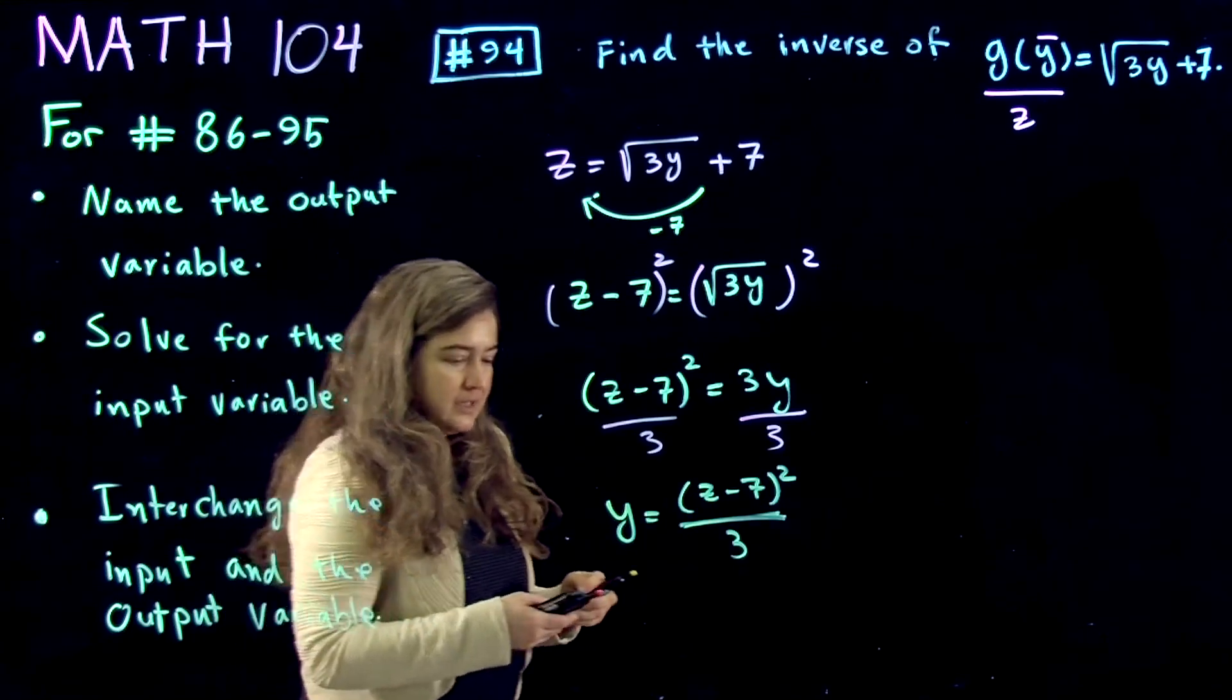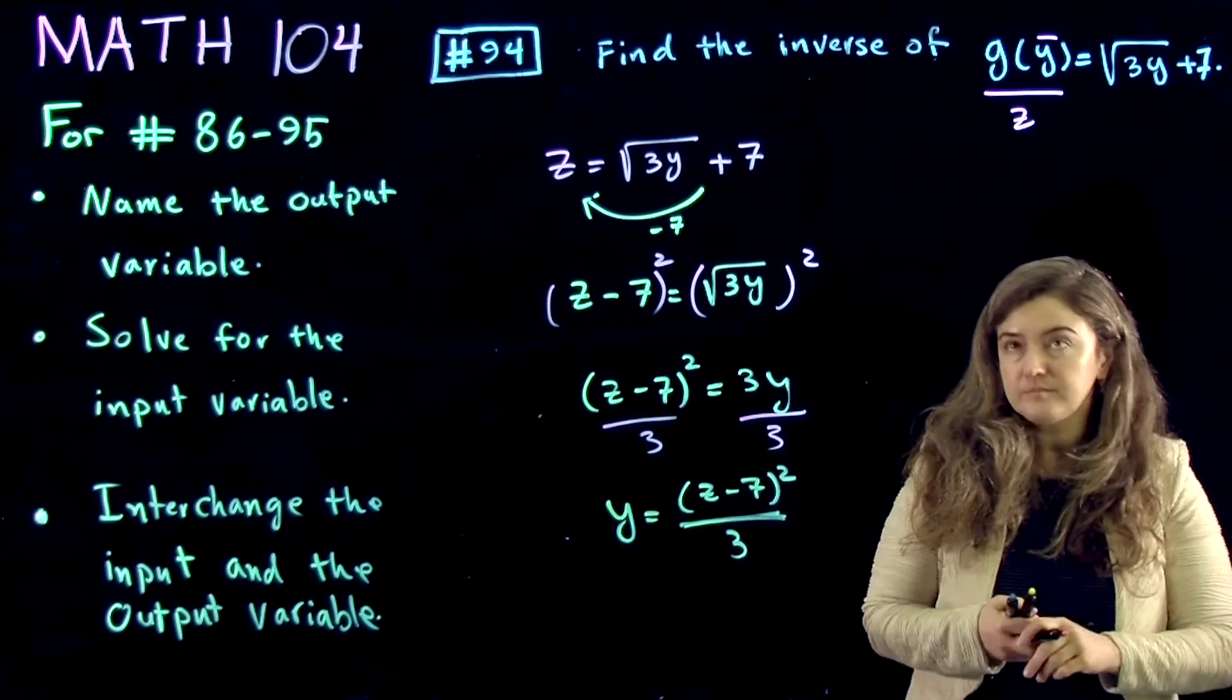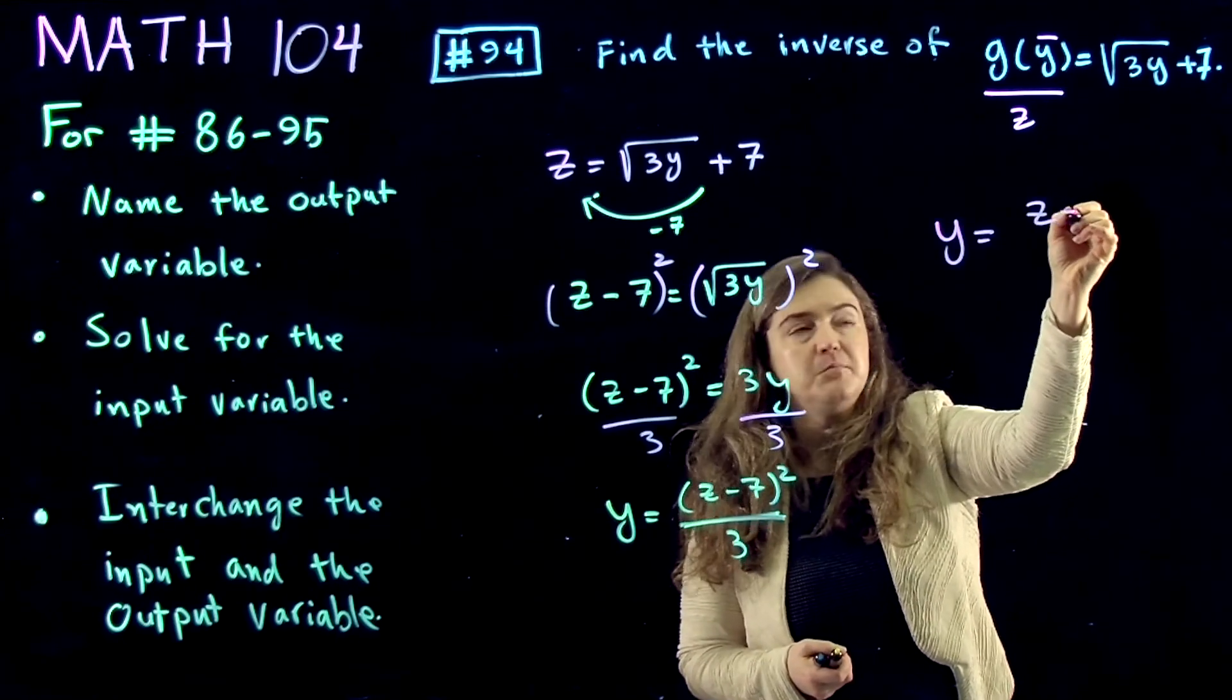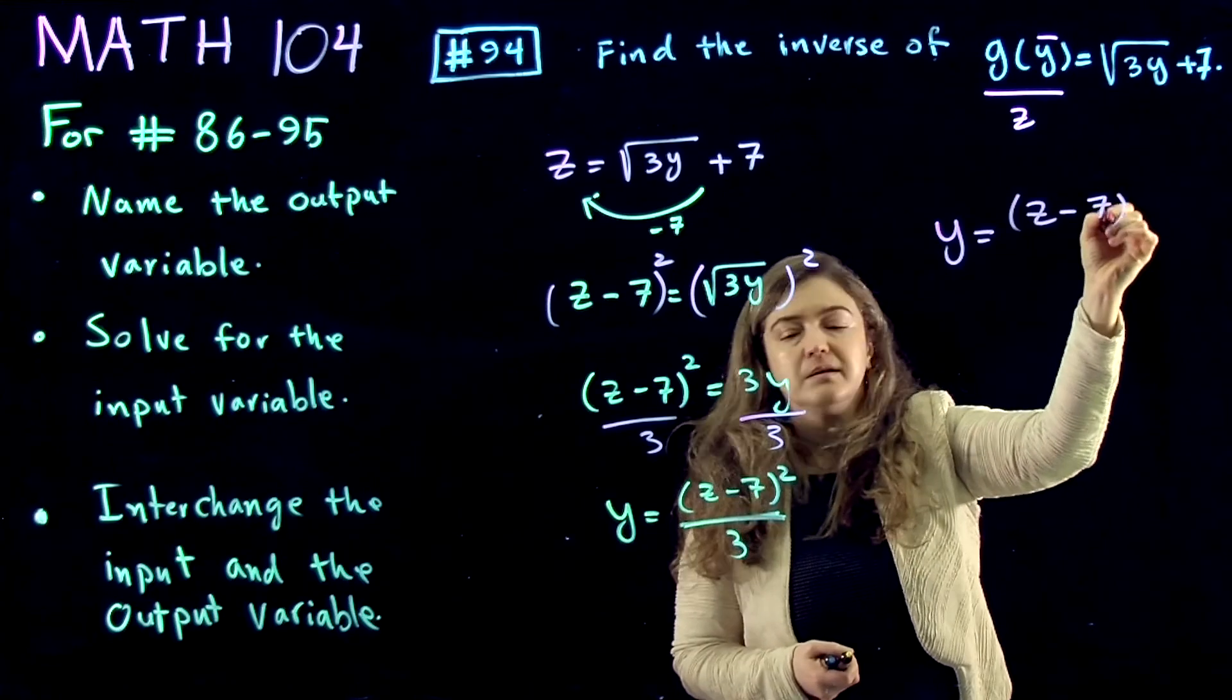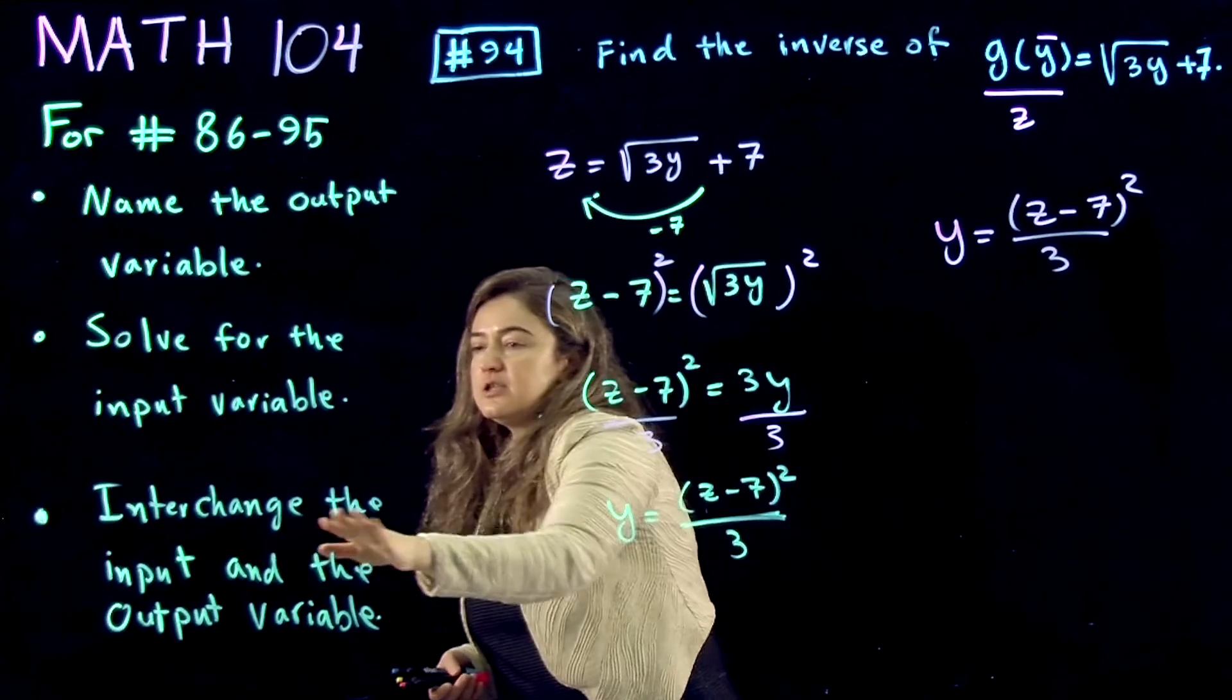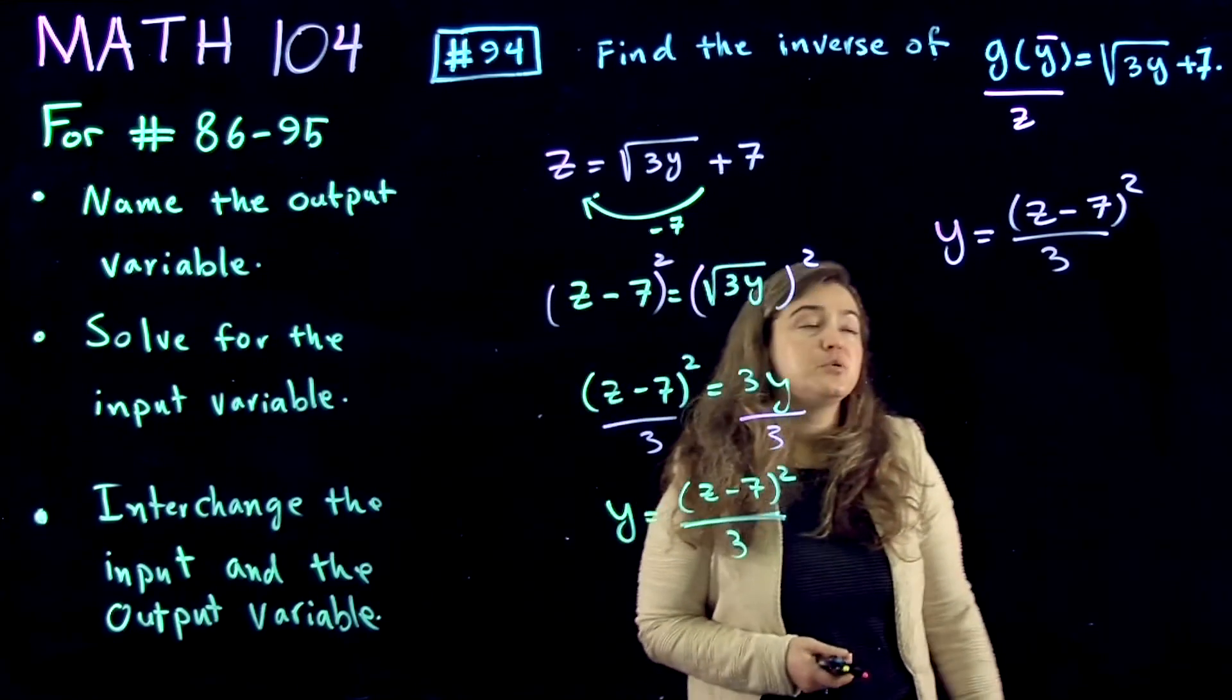Now let's rewrite it over here: y is equal to z minus 7 to power 2 divided by 3. The last part is interchanging the input and the output variable.